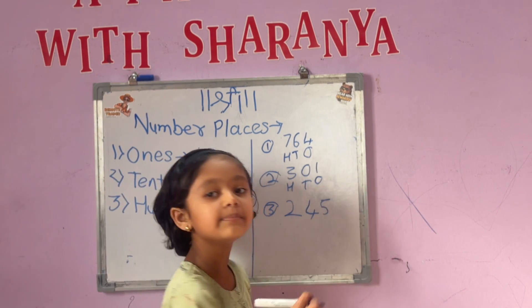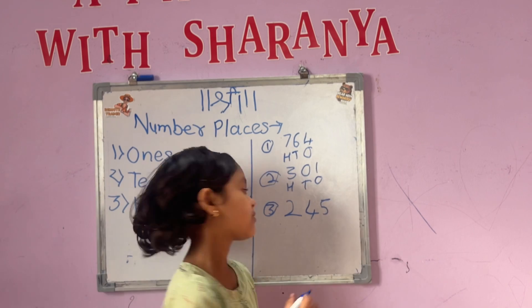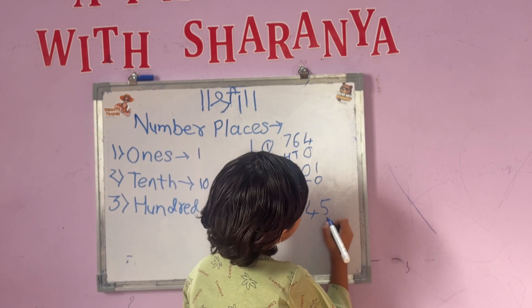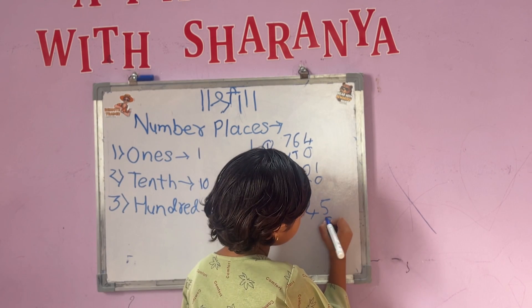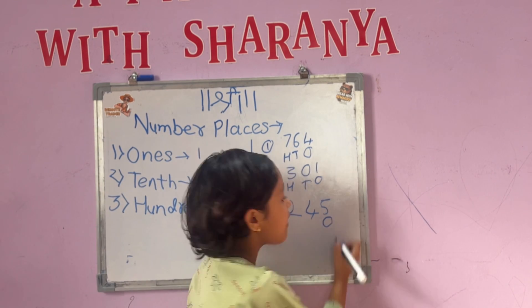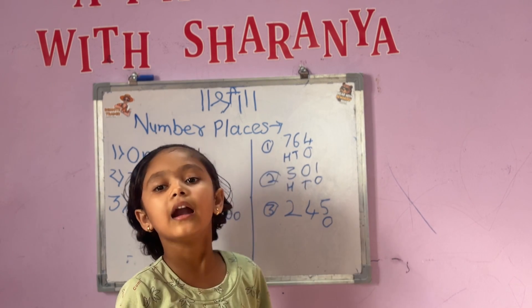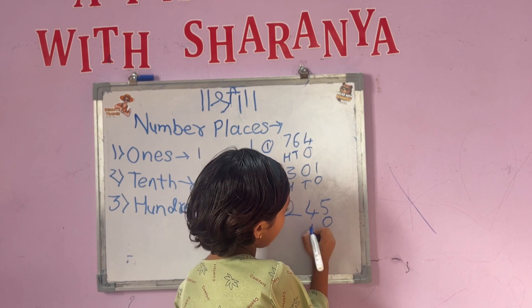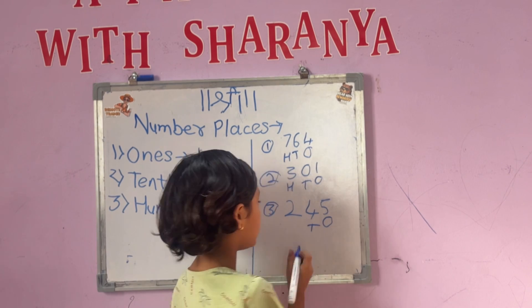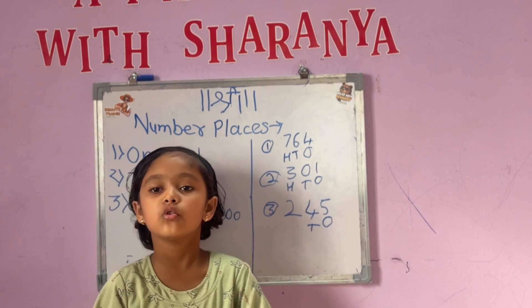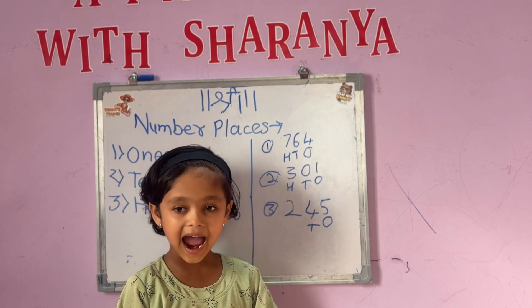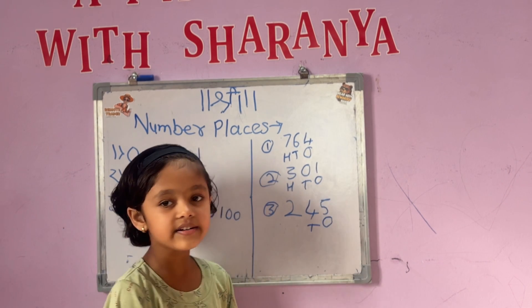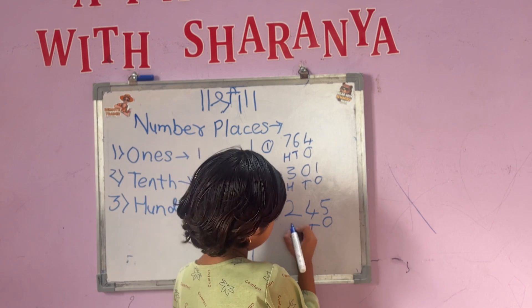Now add the 3rd places. 5 is at the 1st place, 4 is at the 10th place, and 2 is at the 100th place.